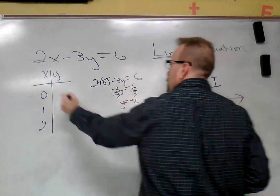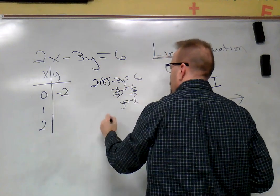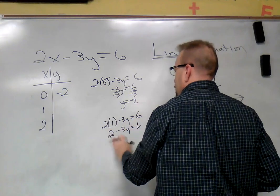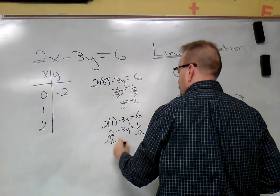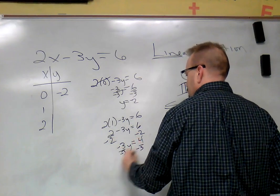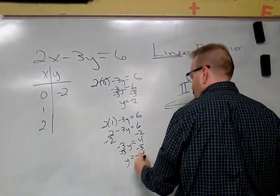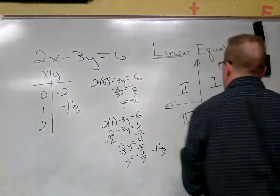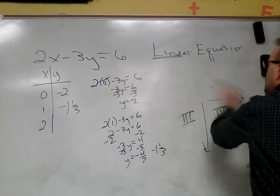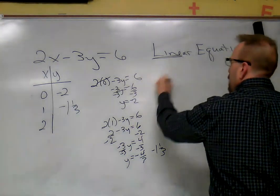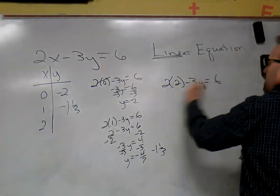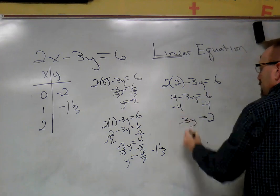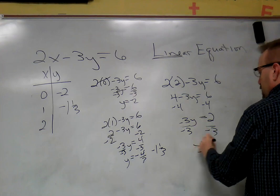y would equal -2. Put in one, two times one is two, subtract 3y equals 6, so -3y equals 4, divide by negative three, y equals -4/3, or negative one and one third. And then if we put in two, four minus 3y equals six, minus four, divide by negative three, and y equals -2/3.